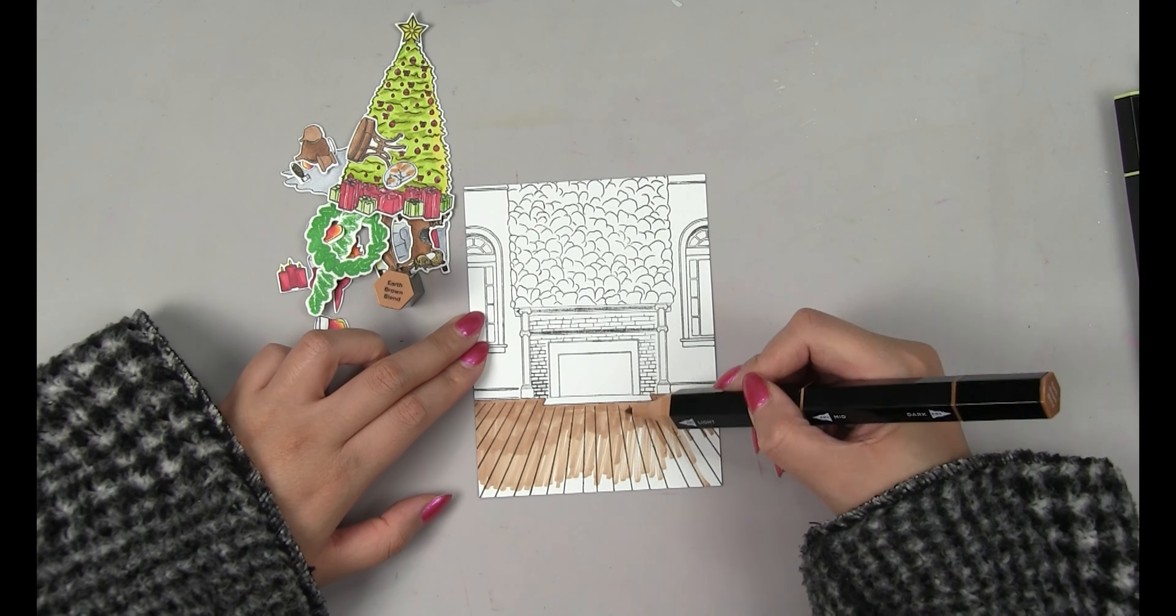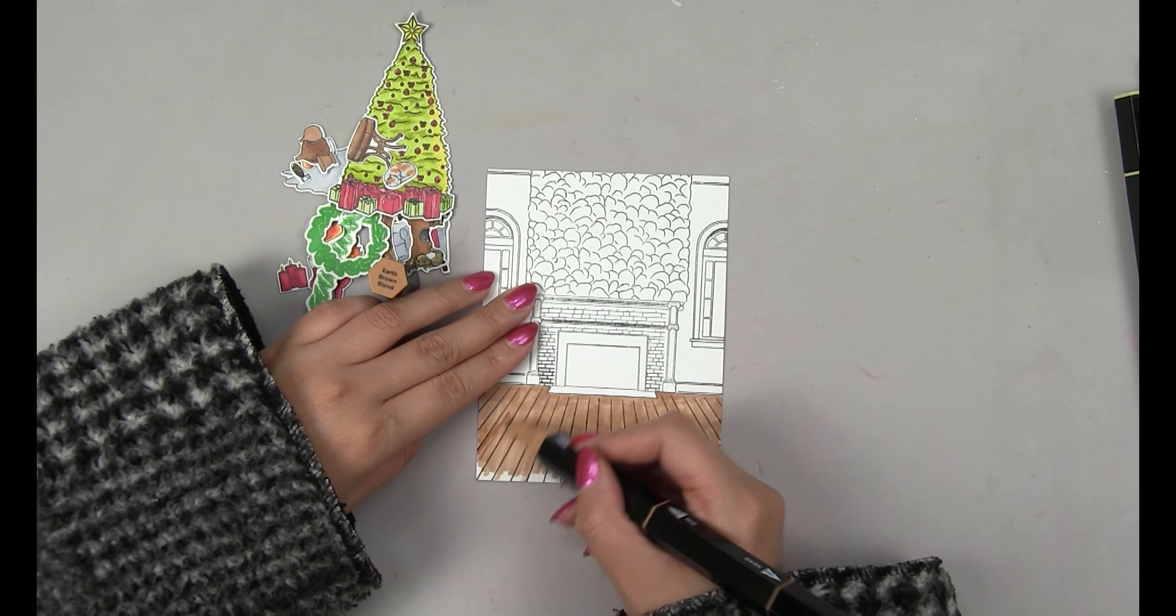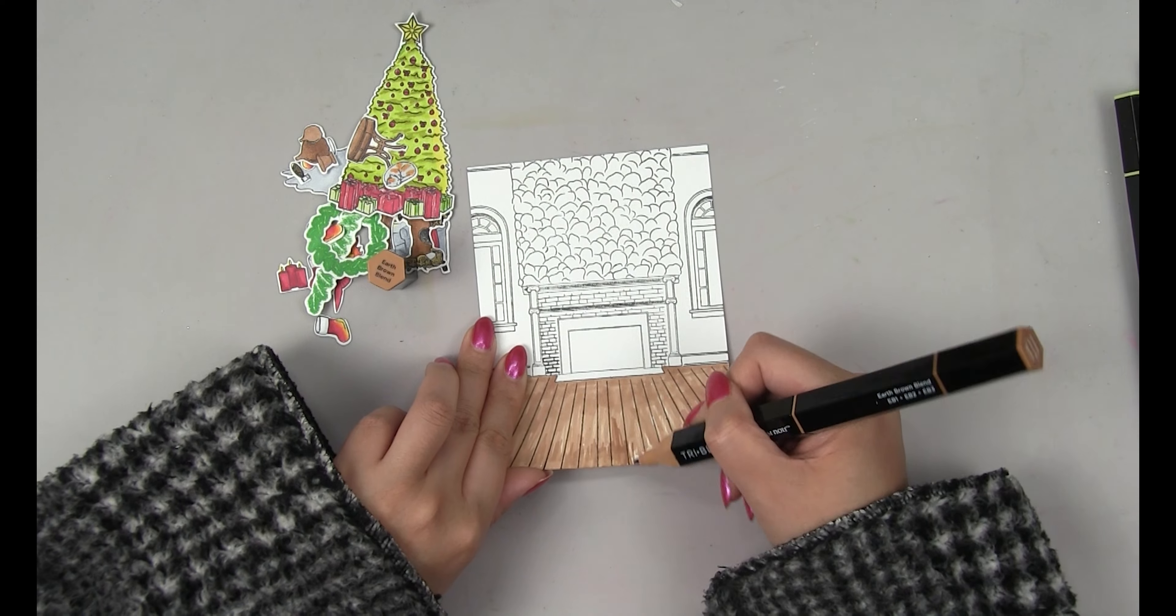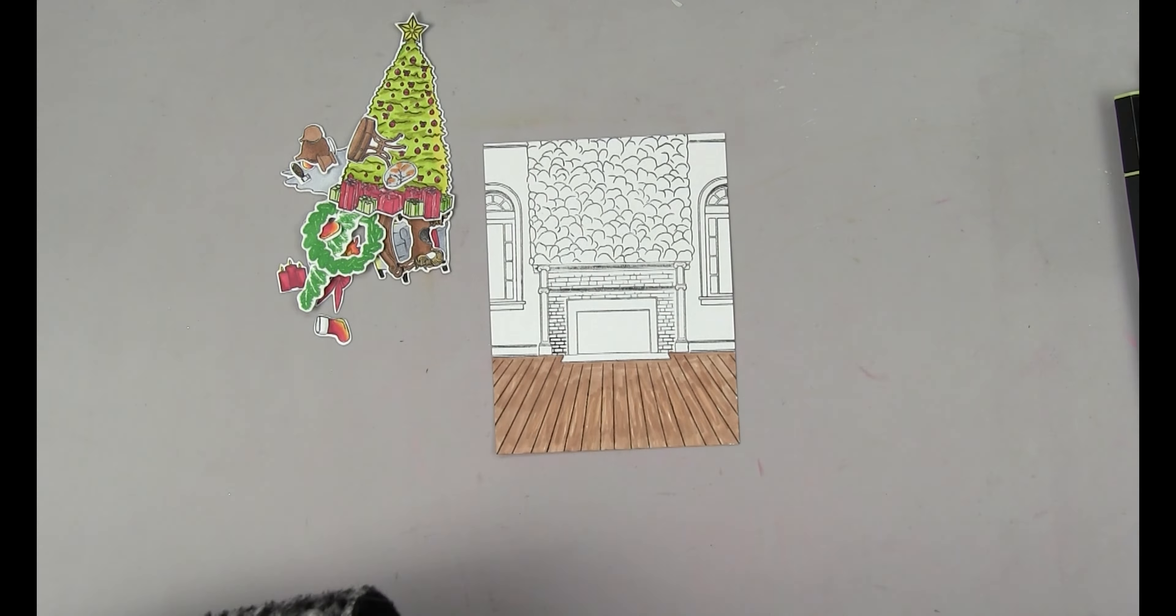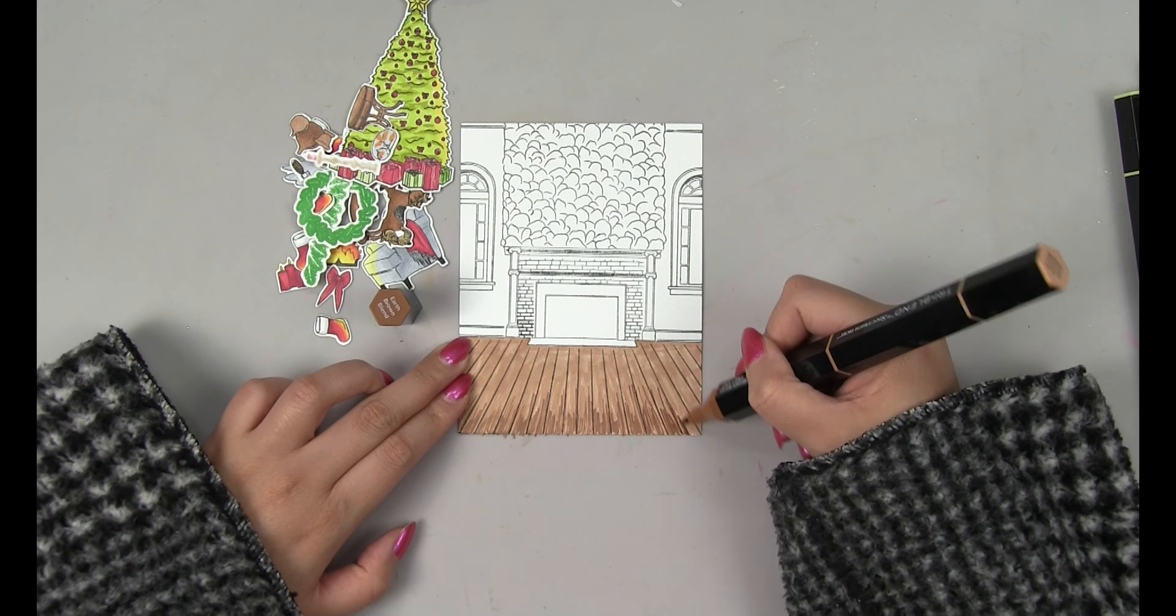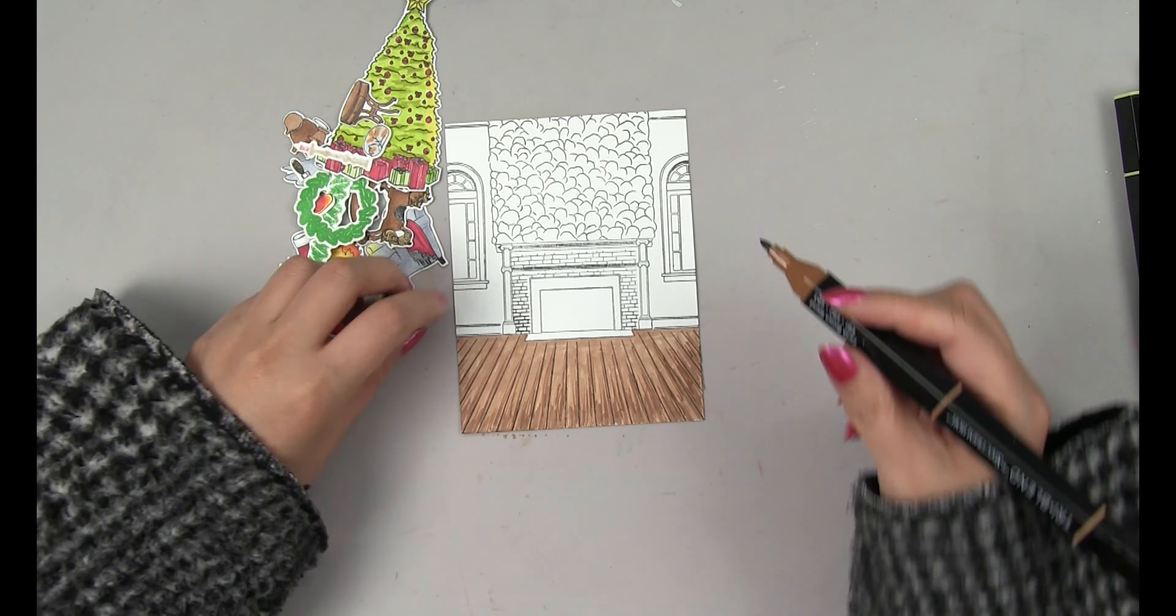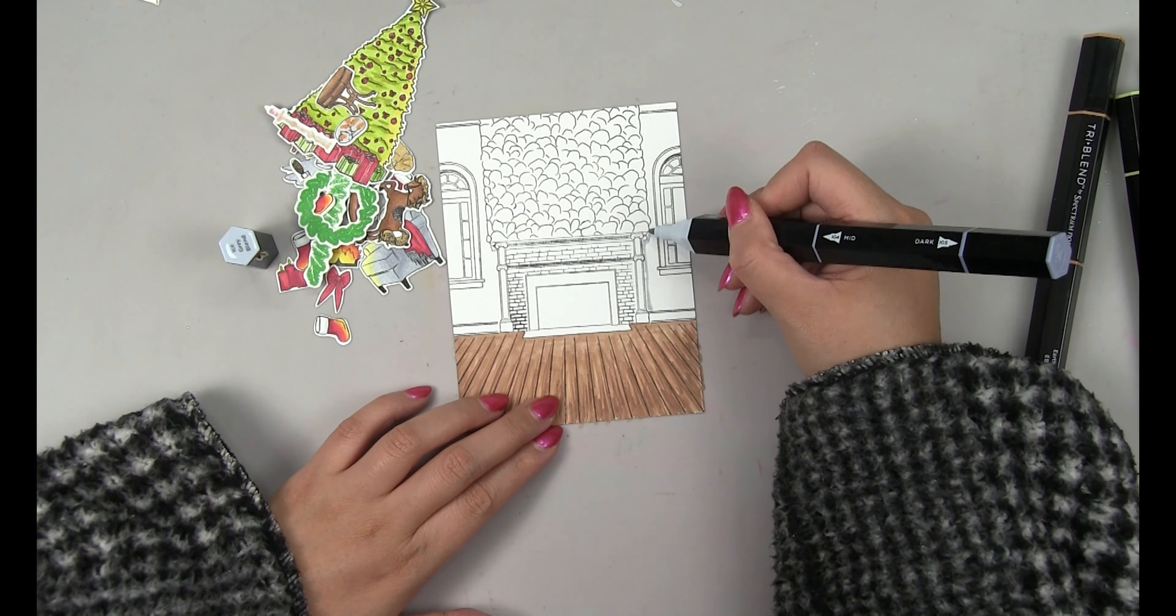For the wooden floor panels I'm using the lighter brown and you can see really I just want to cover the bottom portion of my card panel with this light brown ink and I'm just being really messy about it and now I'm going to take the darkest brown and I'm just going to use flicking motions along the bottom edge of the card panel and I'm going to flick towards the fireplace and then I go back and I do blend some of the dark brown into the light brown.